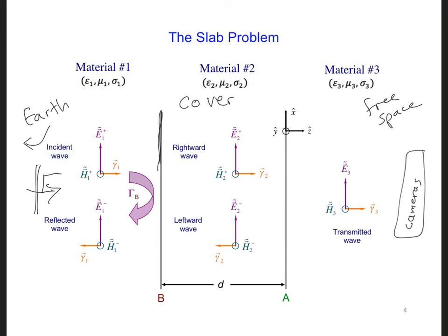Our goal is to have the total reflection coefficient at interface B here equal to zero, so that all of the electromagnetic waves at, say, the center frequency of our camera will be transmitted.